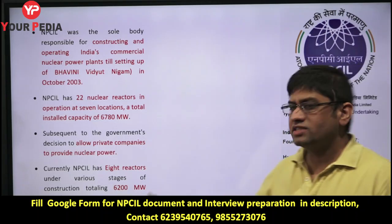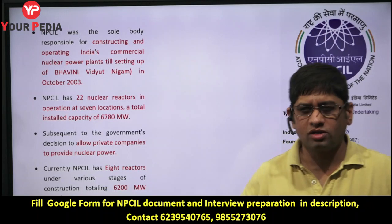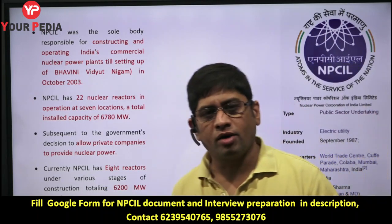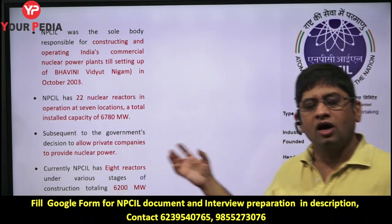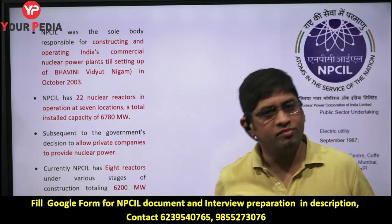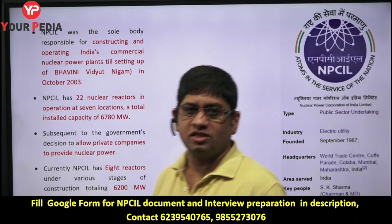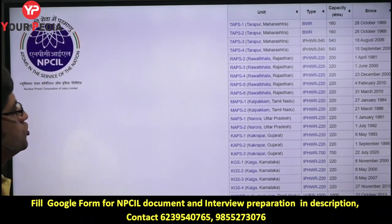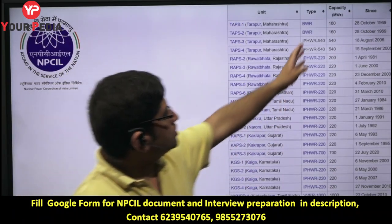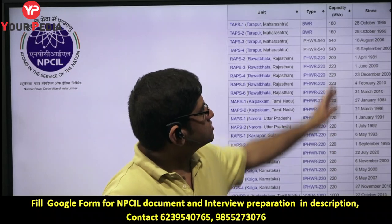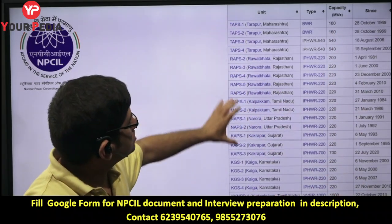The total electricity produced from all sources — thermal, hydel — and out of that, how much is nuclear power: 6,200 MW capacity. You need not memorize the exact megawatt figure when each plant was created. You should know the key plant names like Rajasthan — these names you should know, where the reactors are located.